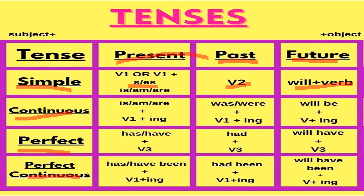In present continuous tense, we use is/am/are. With singular we use 'is,' with plural we use 'are,' and with I we use 'am.' We also use the ing form of the verb — for example, 'going' from 'go.' I am going to school. You are going to school. She is going to school. This is called present continuous tense.